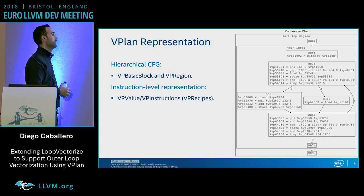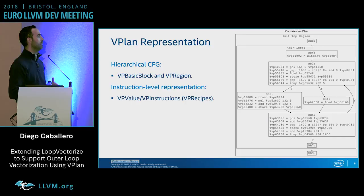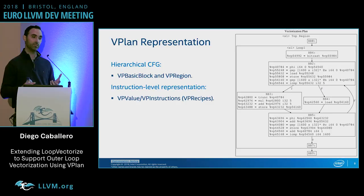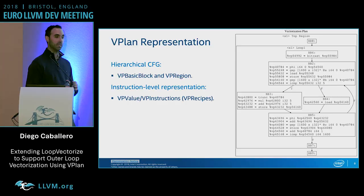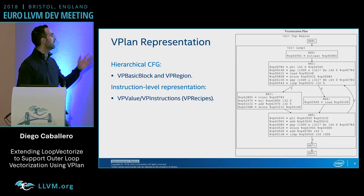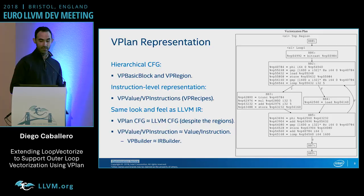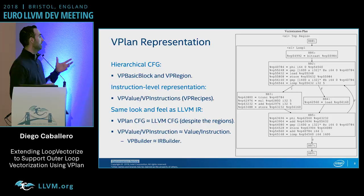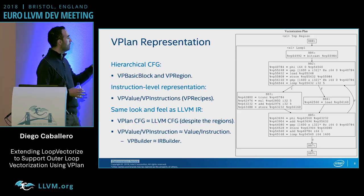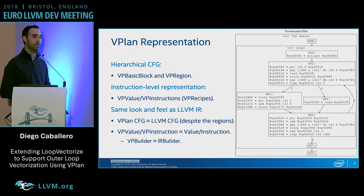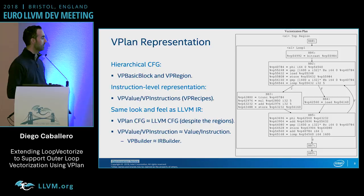The second important element is instruction-level representation using vP values and vP instructions, similar to values and instructions in LLVM IR. At the very beginning we introduced recipes, but this was a stepping stone toward vP values and vP instructions. One key design decision is to make vPlan have the same look and feel as LLVM IR, so anyone familiar with LLVM IR can work with vPlan without too much effort. We even have a vP builder equivalent to the IR builder.